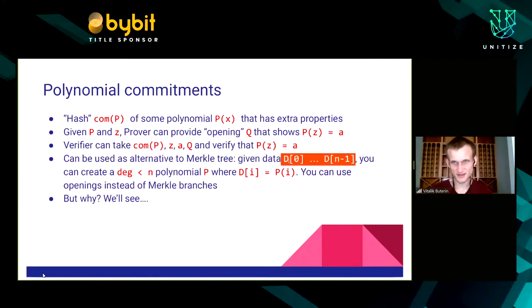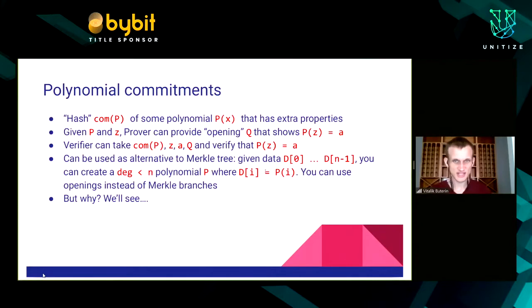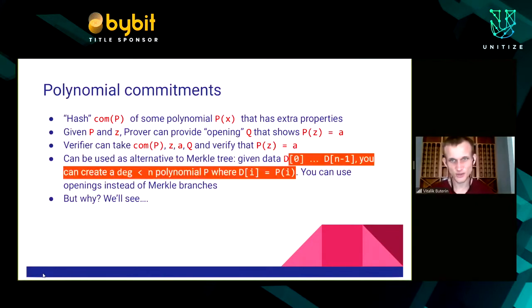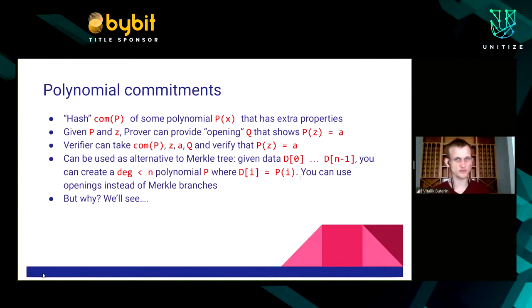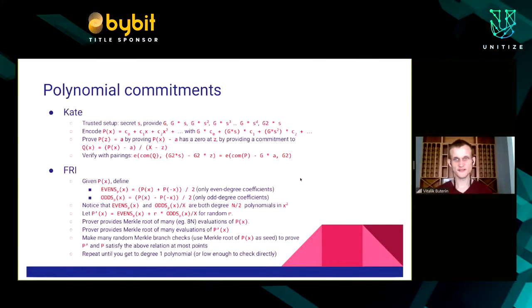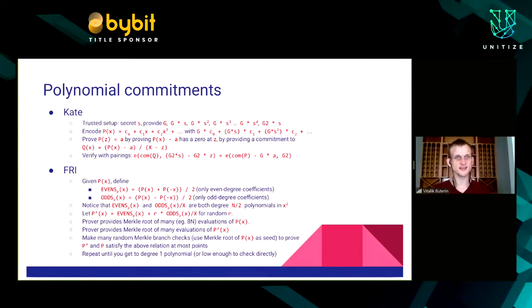You can use polynomial commitments as an alternative to a Merkle tree. If you have a bunch of data d_0 through d_{n-1}, you represent it as a polynomial where the i-th element equals the polynomial evaluated at point i. This is easy to construct using Lagrange interpolation, and there are many algorithms for this.